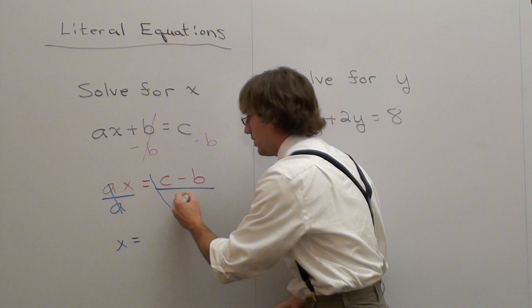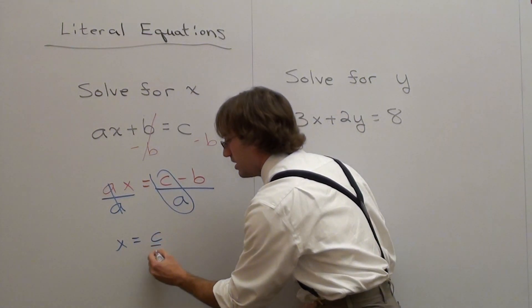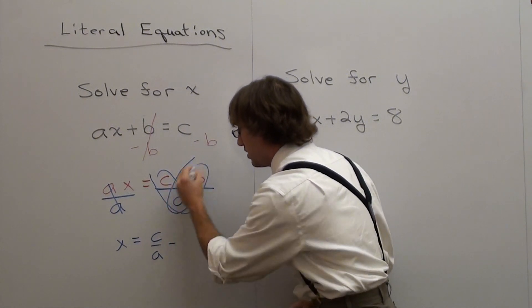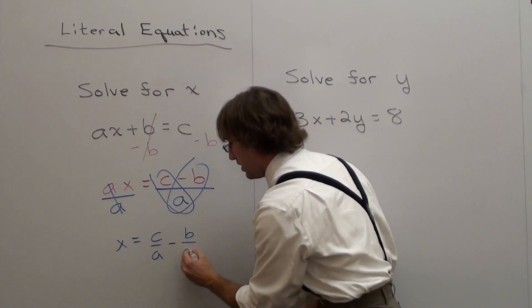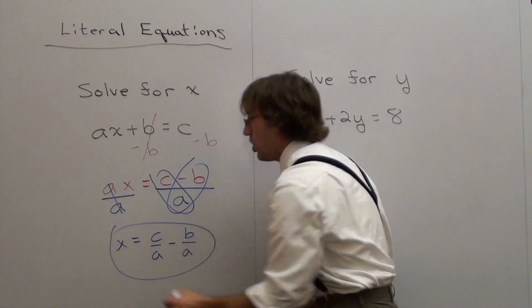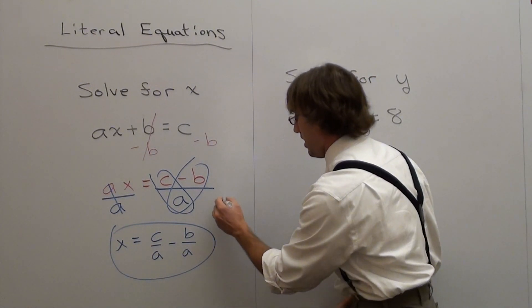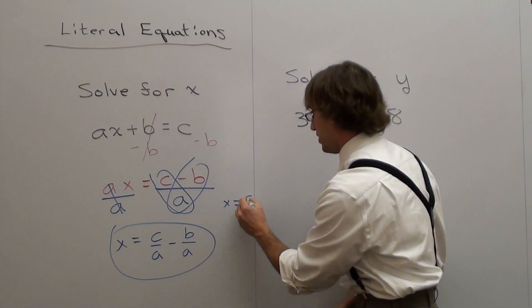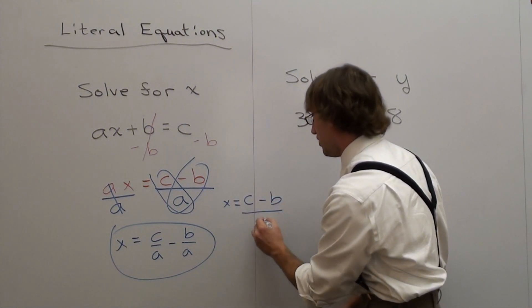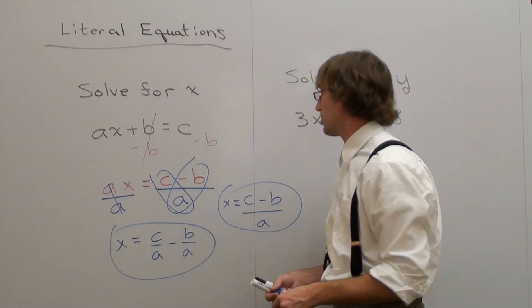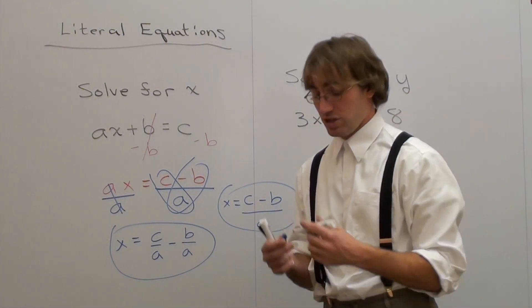You have c over a, and then negative divided by positive is negative. b over a, and that's your answer. You could also leave it as x equals c minus b over a. Both answers would be constituted as right, and I wouldn't mark it off if I was your teacher, but it depends on who your particular teacher is.